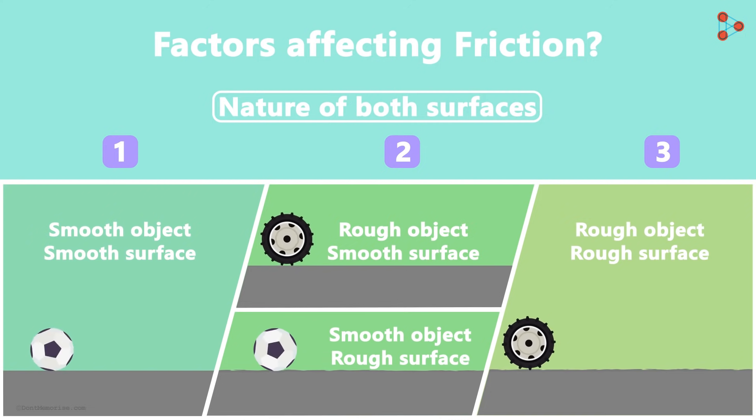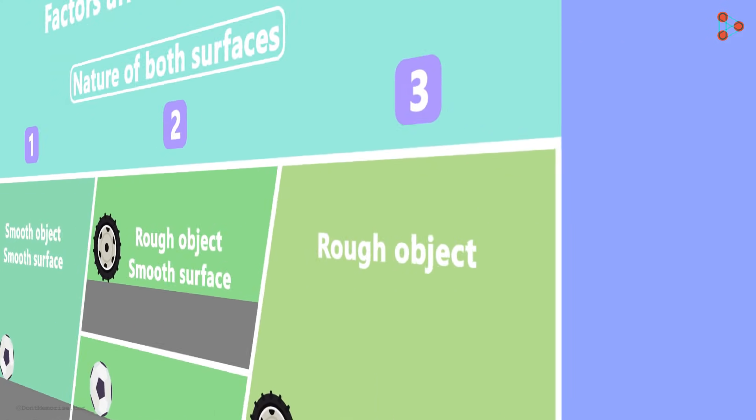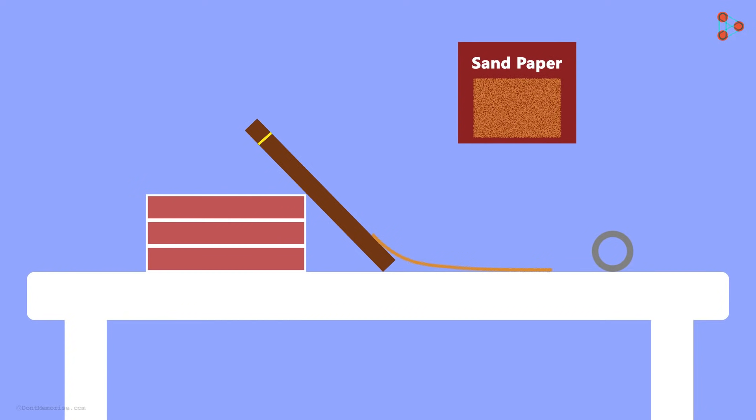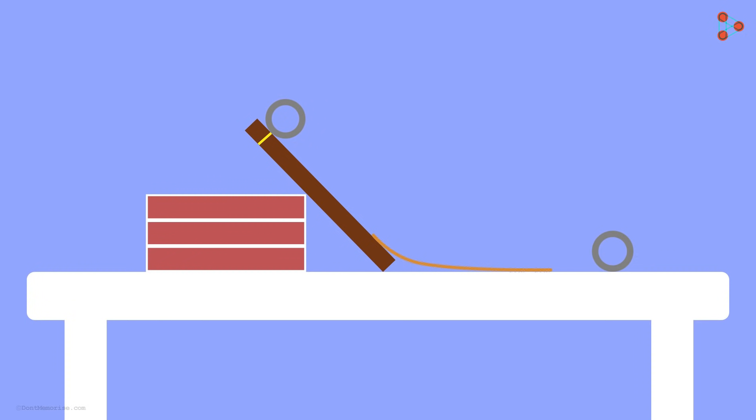If you want to find out if this is true, here's what you can do at home. Create an inclined slope on a table like this and mark a point somewhere on it. Now from this point, let a small cylindrical shaped object move down. You will see that it reaches a particular point and then stops. Next, place sandpaper right under the slope and release the object from the same point as before.